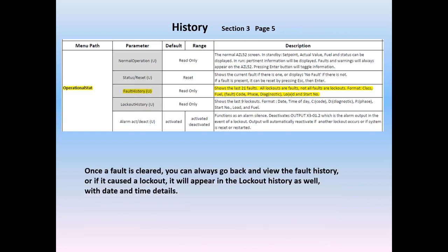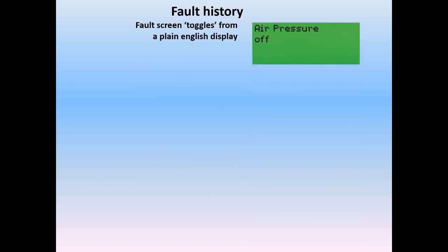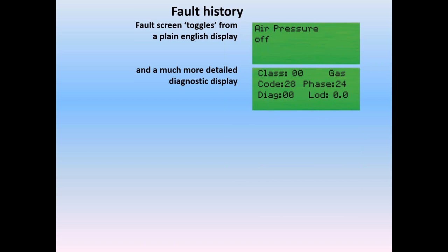Once you clear that fault, you can always go back and view it in the fault history. Or if the fault caused an actual lockout, then you can see it in the lockout history as well, and that will have date and time details specifically of when the fault occurred. When you go back to the fault history and look at it, the fault screen is going to toggle again from the plain English display to a much more detailed diagnostic display. Pressing enter will halt the screen on either of the two toggles so that you can work on the unit.